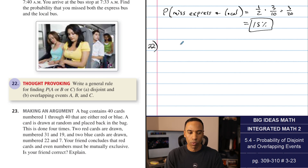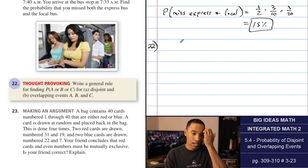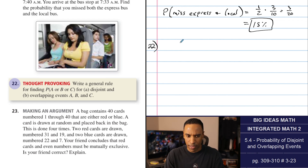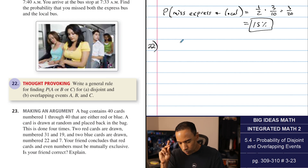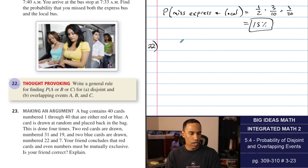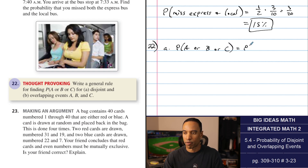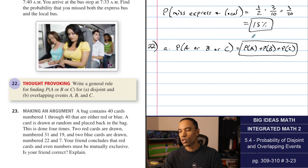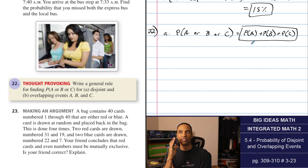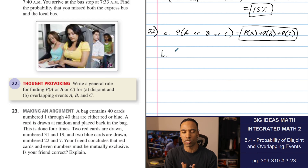Number twenty-two, thought-provoking: write a general rule for finding probability of A or B or C for disjoint and overlapping events. For disjoint events: probability of A or B or C simply equals probability of A plus probability of B plus probability of C — no overlap, straightforward addition. For overlapping events, it's more complex and requires thinking through a three-circle Venn diagram.